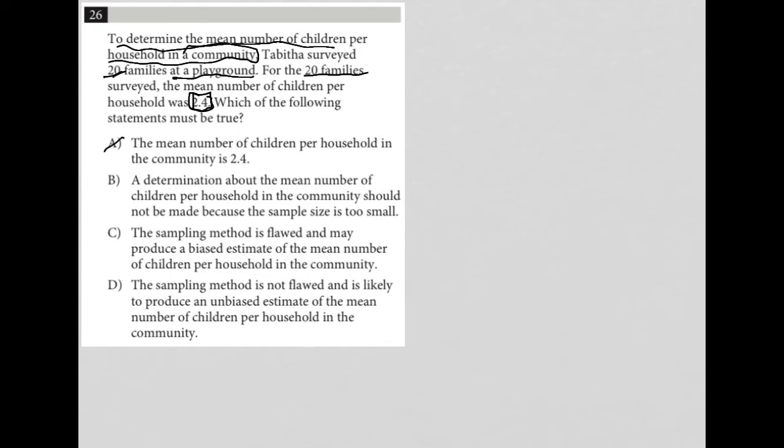Choice B, a determination about the mean number of children per household in the community should not be made because the sample size is too small. Possibly, right? I don't know. Maybe the entire community is only 20 families. So B is definitely a better answer than A, but it has its problems as well. So I'm going to put a little checkmark next to B because it's better than A, but I'm going to move on to C to see if C is even better.